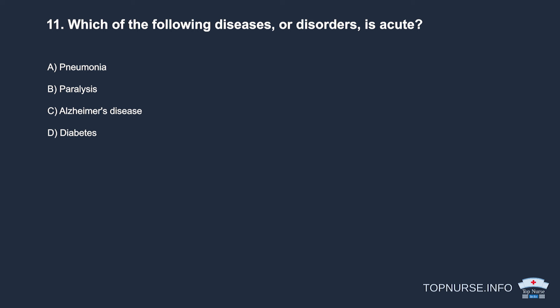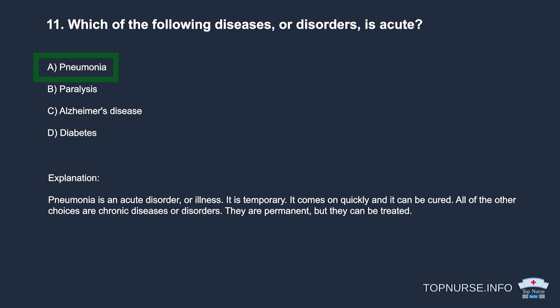Question 11: Which of the following diseases or disorders is acute? a. Pneumonia. b. Paralysis. c. Alzheimer's disease. d. Diabetes. Correct answer: a. Pneumonia. Pneumonia is an acute disorder — it is temporary, comes on quickly, and can be cured. All other choices are chronic diseases or disorders that are permanent but can be treated.